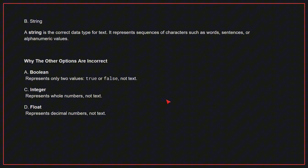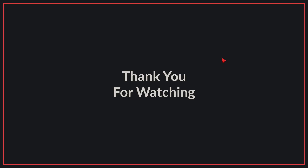Why the other options are incorrect? A: Boolean. This represents only two values — true or false — not text. C: Integer. This represents whole numbers, not text. D: Float. This represents decimal numbers, not text. Therefore, the correct answer is B. We have come to the end of today's video. If you liked the video, please make sure to like and subscribe. Goodbye!